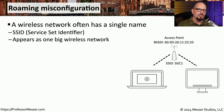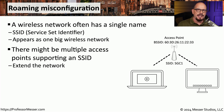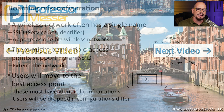If you have a number of different access points at work or at home, you may have configured them with the same wireless network name, or the same SSID. That service set identifier allows us to create a large wireless network using multiple access points, and as you move inside a building or throughout a campus, your device will seamlessly move from access point to access point. But this requires that all access points are configured exactly the same. If users move to an access point that doesn't have the same configuration as the previous one, they could be dropped from the network and required to reconnect. To ensure a seamless experience, all access points must have identical security features and configuration details.